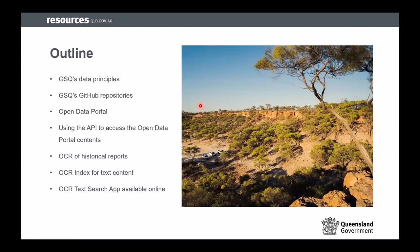Here's an outline of my talk. I'm going to cover GSQ's data principles, including some of the reasons why we're getting you to fill in these new templates and our reporting standards. I'll talk about our GitHub repositories — which is kind of cool for a government department. We're living in the future. I'll also cover our open data portal and how to use the API to access its contents, and then the OCR of our historical reports — a project to make older reports text-searchable and machine-readable — and what we've done with that, including building an index and a text search app.